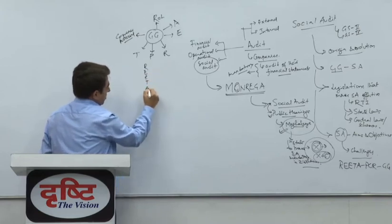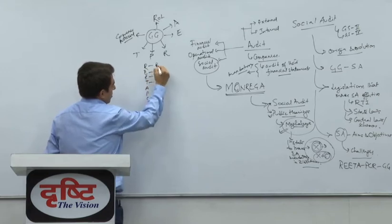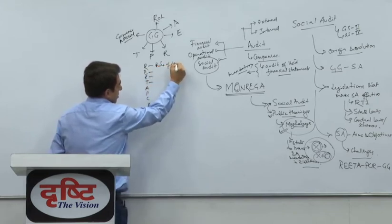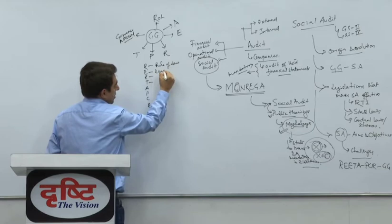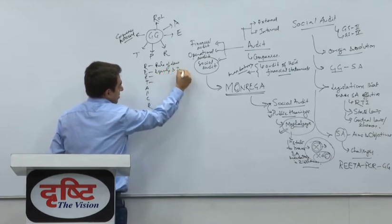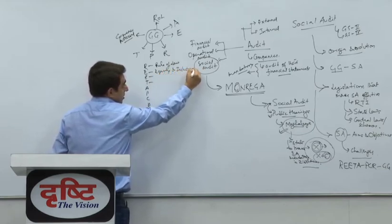Rule of law, equity and inclusiveness, these are the parameters given by World Bank.